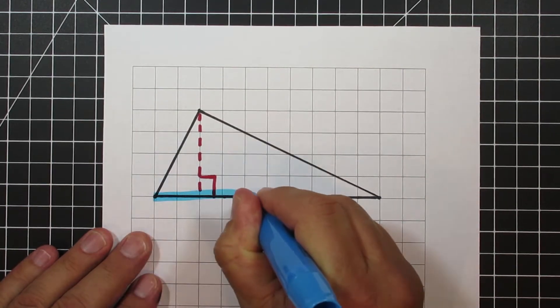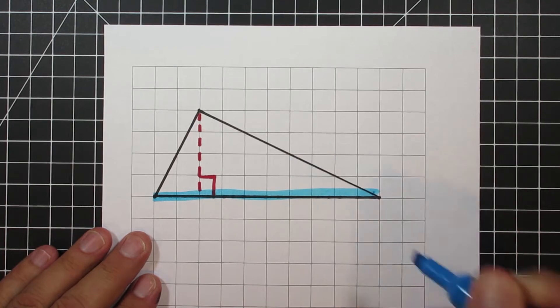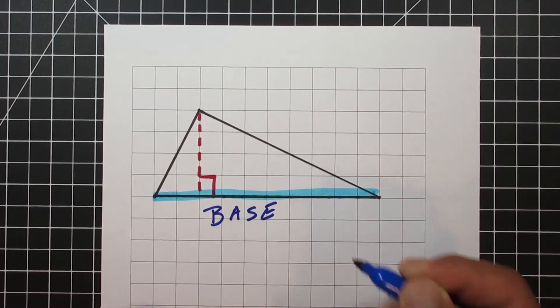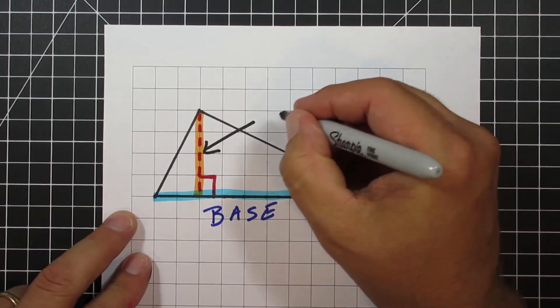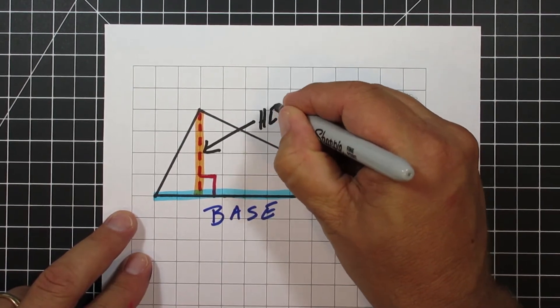This is a triangle a little bit more like a traditional one we're used to seeing. Again, the base is in blue, but the height is the dotted line. It's inside of the triangle and again you can see the right angle is showing us where the height of this triangle would be.